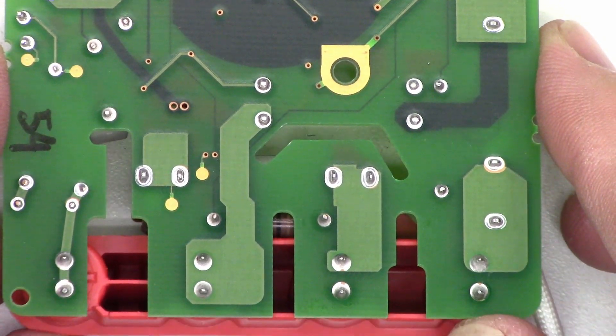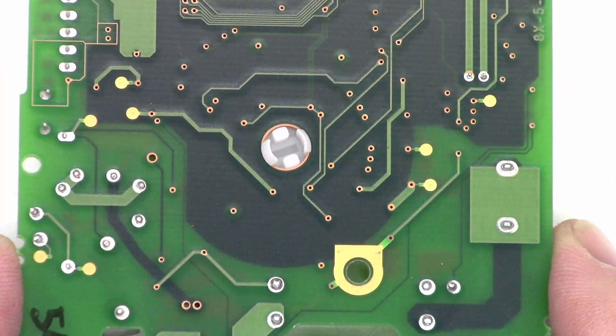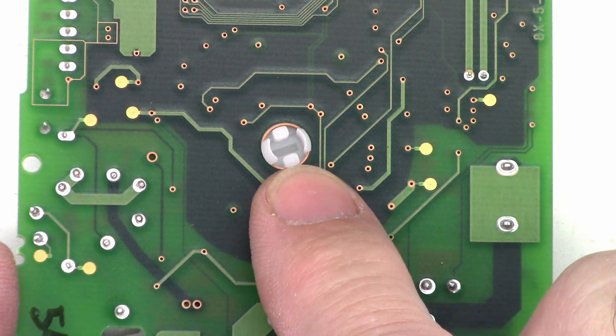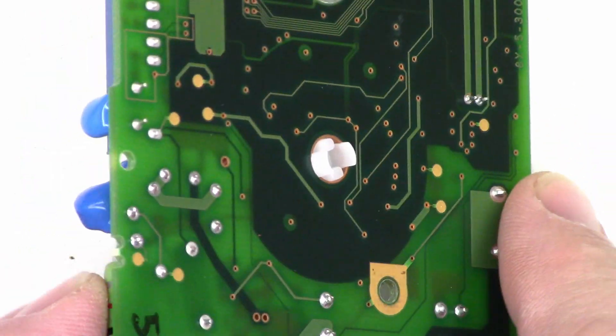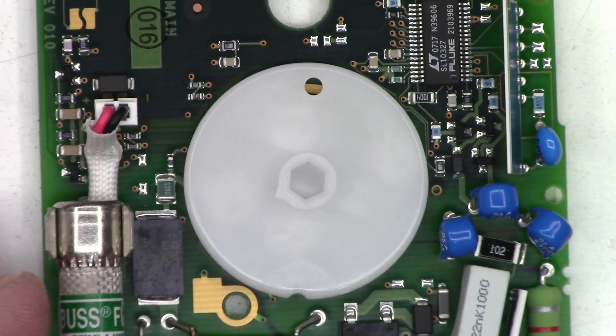So I think the first thing that I'm gonna do is go ahead and remove this rotary encoder, the mode select switch as it is, we'll look at the contacts in here and maybe go ahead and clean and polish the contacts.